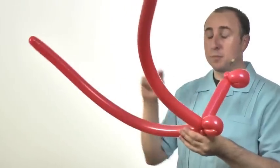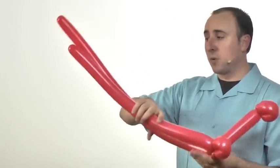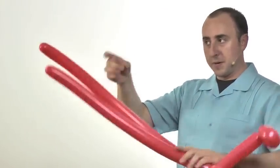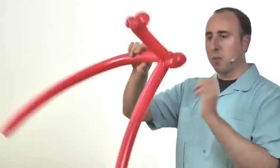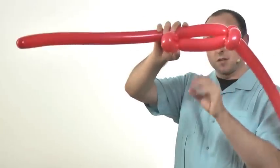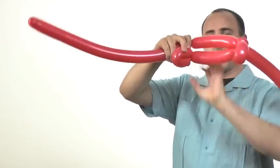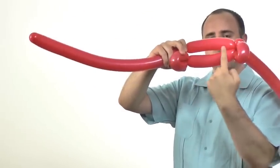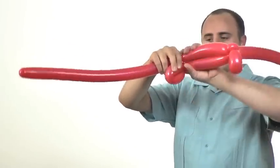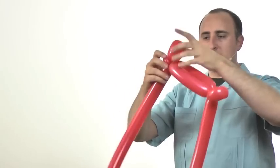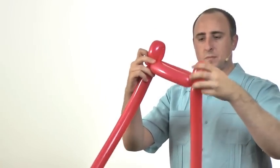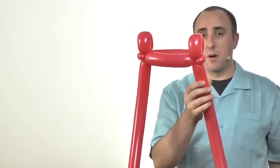Now make sure you don't get your two sections of balloon confused. Whichever one's longest, this one here is the one that you're going to want to go back across and twist it at that same length. So this one here should be the same length as this one here. Twist it like so and then we have the top part of our guitar.